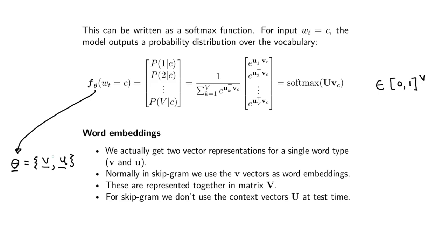After you've learned your model, you end up with a bunch of V vectors and U vectors, and you want to use them downstream as word representations. For skip-gram, normally what we do is use the context vectors U at test time as the representations. You could also use V — they'll be quite similar. There are other options too; GloVe, which we'll look at in a future video, basically adds up the vectors and uses that as the representation. But for skip-gram we use U at test time, and empirical tests show this is a good approach.